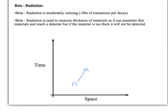Beta minus is the opposite way around — a neutron decays into a proton, which is positively charged, because a down quark is changing into an up quark through the weak interaction. To conserve charge, since it's neutral before and must be neutral after, a W minus boson is formed, which means an electron is emitted, and by the principles of conservation of lepton number, an anti-electron neutrino must also be produced. Beta minus radiation is moderately ionising — hundreds of ionisations per decay — not quite as ionising as alpha but more ionising than gamma. It's used quite a lot in factories, especially paper manufacturing, as a way of detecting the thickness of materials.